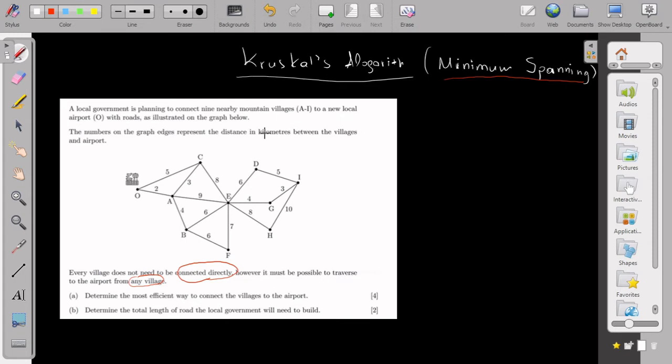I start with the smallest edge, which is OA, which is two kilometers. Then I'm trying to find if I have another two-distance edge which connects other vertices - there is not another two.